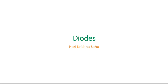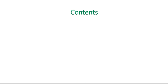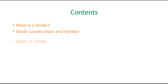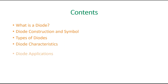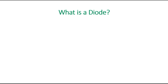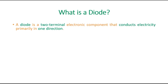Good morning, today we are going to discuss about diodes. Here are the contents: first we will look at what is a diode, how the diode construction and the symbol is, what are the types of diodes, then diode characteristics, and finally diode applications. A diode is a two-terminal electronic component which conducts electricity primarily in one direction — that is the definition of a diode.